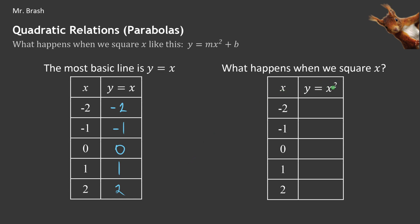But what if we square the x values? If I take negative 2 and square it, I end up with positive 4. Similarly, negative 1 squared is 1, 0 squared is 0, 1 squared is 1, and 2 squared is 4.